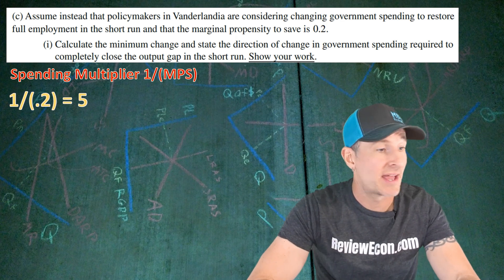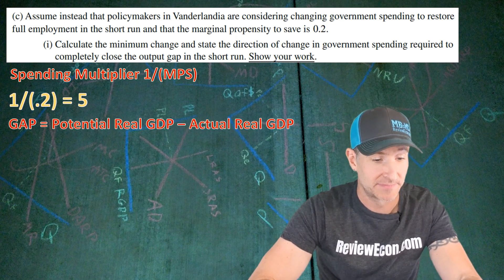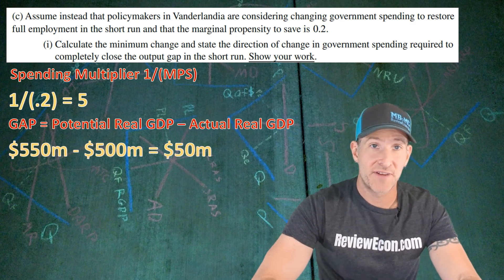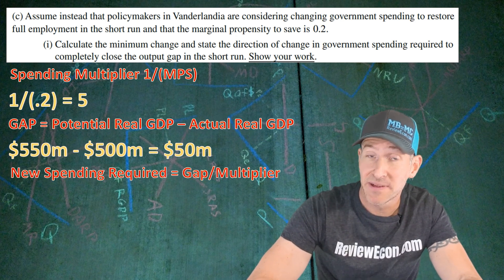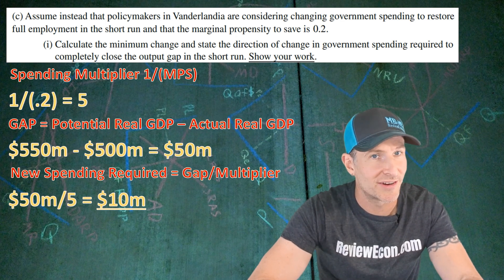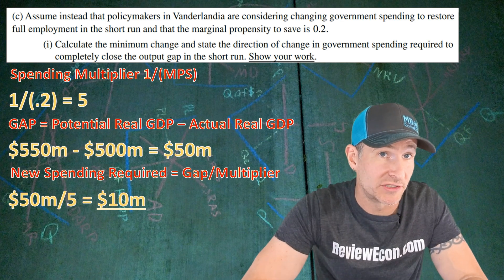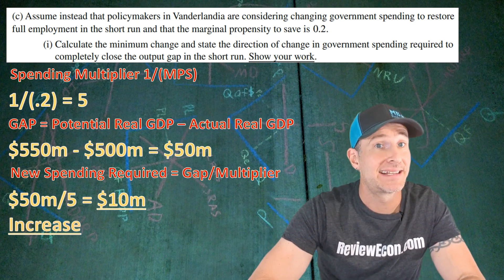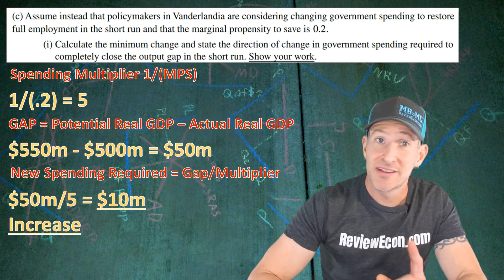We also have to remember that the output gap is potential real GDP minus actual real GDP. In this case, we have a recessionary gap of $50 million. Next, we find the required change in government spending by taking the gap and dividing it by the multiplier: $50 million divided by the multiplier of 5 gives us a $10 million change in government spending. Since we are trying to increase real GDP, you also have to identify this as a $10 million increase — and if you show all that work, you get yourself a point.